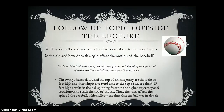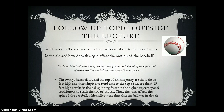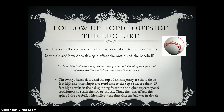My follow-up topic was: how does the red yarn on the baseball contribute to the way it spins in the air, and how does the spin affect the motion of the baseball? Newton's third law of motion states that every action is followed by an equal and opposite reaction, so a ball thrown up must come down. In an experiment where you throw a baseball toward an imaginary arc — once with a proper grip throwing it three feet high, and once throwing it fifteen feet high — the ball spins faster in the higher trajectory and takes longer to reach the top of the arc. The yarn affects the spin of the baseball, which affects the time it's in the air by rotating for a longer period of time.